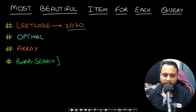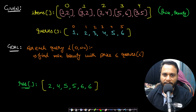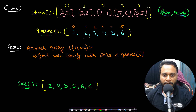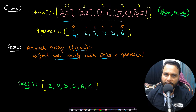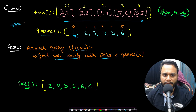Now let's look at an example for better understanding. We are given an items array of size n, where each element is a pair: the first value is the price and the second is the beauty. We are also given a queries array. Our goal is to find, for each query i in range 0 to n-1, the maximum beauty we can afford where the price is less than or equal to queries[i]. We'll take the price to be 1 and initialize a max beauty variable to 0.